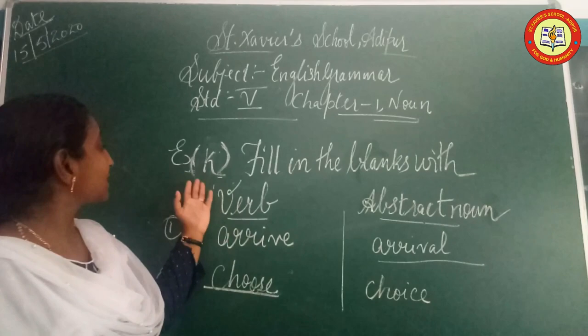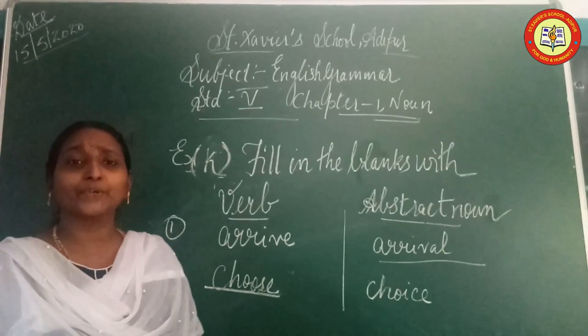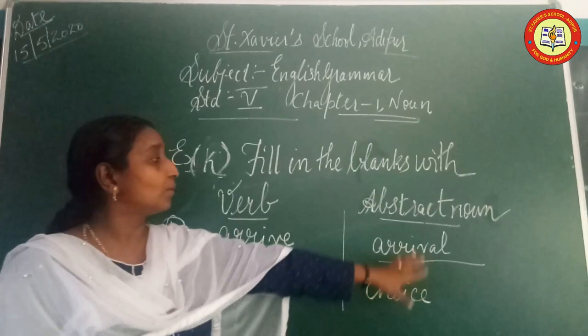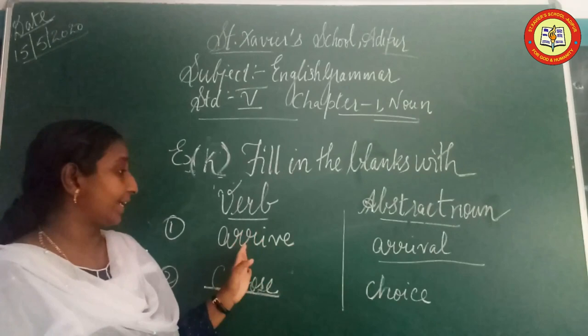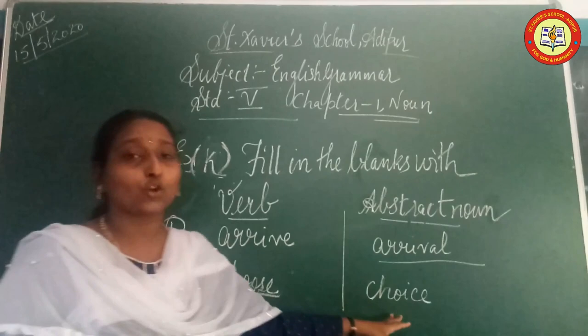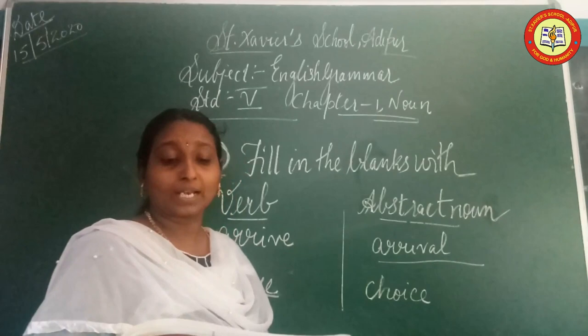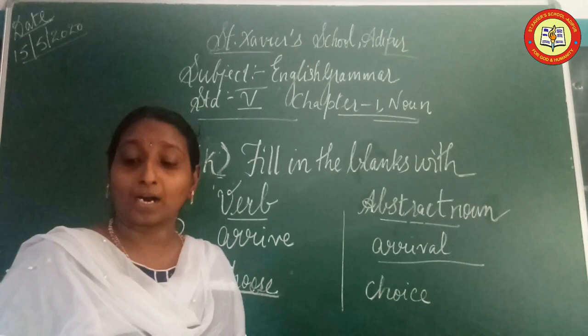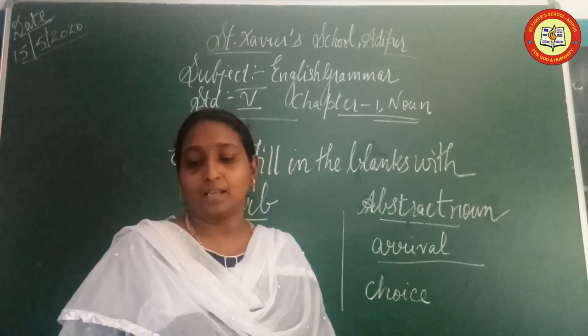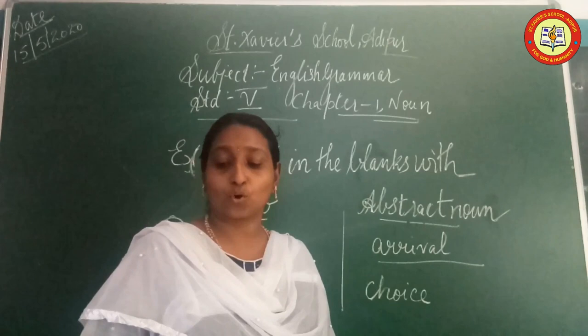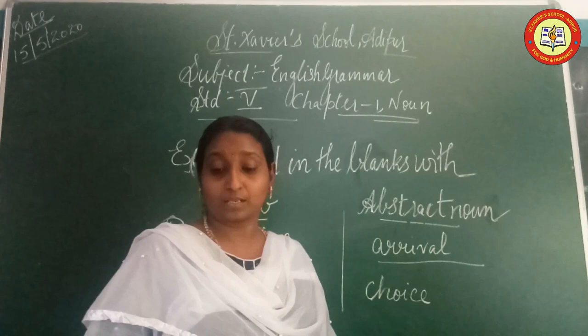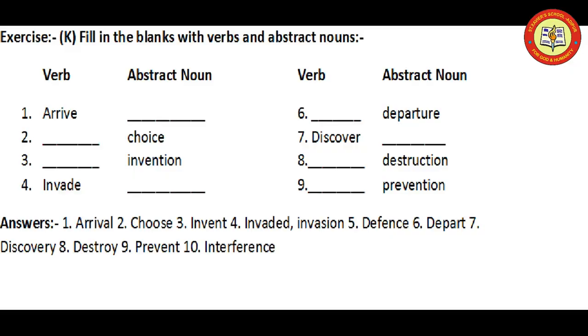Exercise K: Fill in both forms — verb and abstract noun. Arrive → Arrival. Choose → Choice. Invade → Invasion. Invade → Invasion. Defend → Defense. Depart → Departure. Discover → Discovery. Destroy → Destruction. Prevent → Prevention. Interfere → Interference.